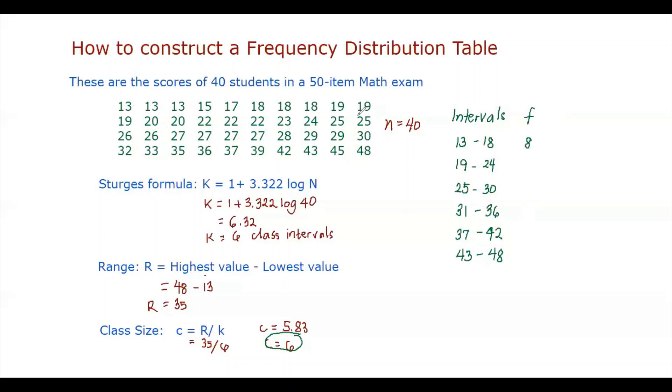From 19 to 24, there are 12 observations. From 25 to 30, there are 12 observations. From 31 to 36, there are 4 observations. From 37 to 42, there are 3 observations. And last, from 43 to 48, there are again 3 observations.